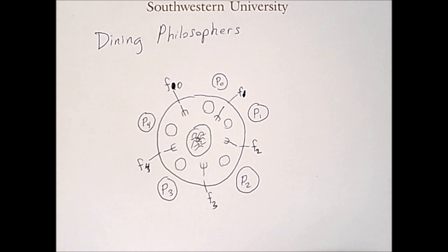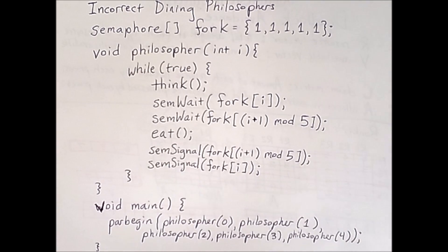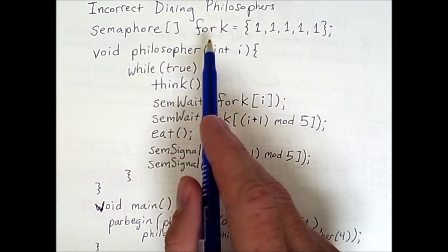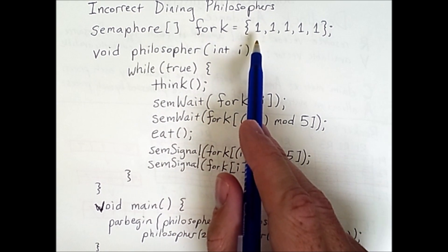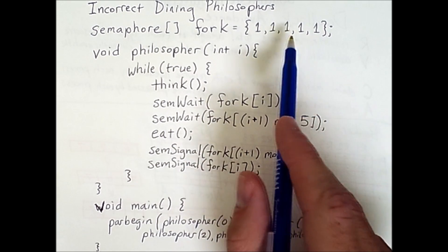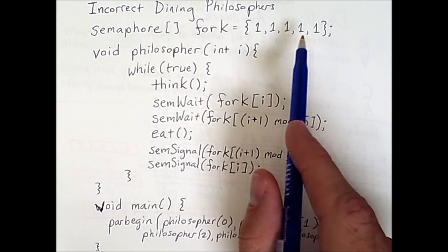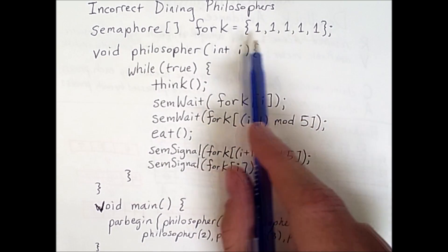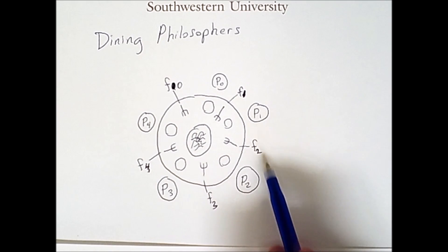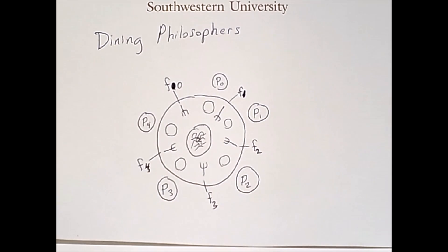In fact, we're going to look at some incorrect code that leads to deadlock, or at least has the potential to lead to deadlock in this problem. In this code, we have an array of semaphores named fork. There's one semaphore for each fork around the table. Each value is initially one, indicating that only one person can use a fork at a time, and the indices of the forks in this array correspond to the indices of the forks around the table in this diagram.